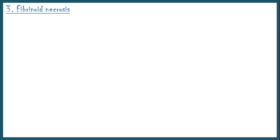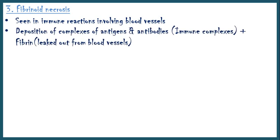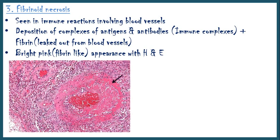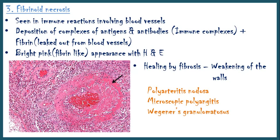Fibrinoid necrosis is a special form of necrosis usually seen in immune reactions involving blood vessels. It is characterized by deposition of immune complexes along with fibrin, which leaked out from blood vessels, giving rise to a bright pink appearance with H&E stain. Healing of the necrotic focus occurs by fibrosis, which may lead to weakening of the vessel walls. It is commonly seen in conditions like polyarteritis nodosa, microscopic polyangiitis, Wegener's granulomatosis, and systemic lupus erythematosus.